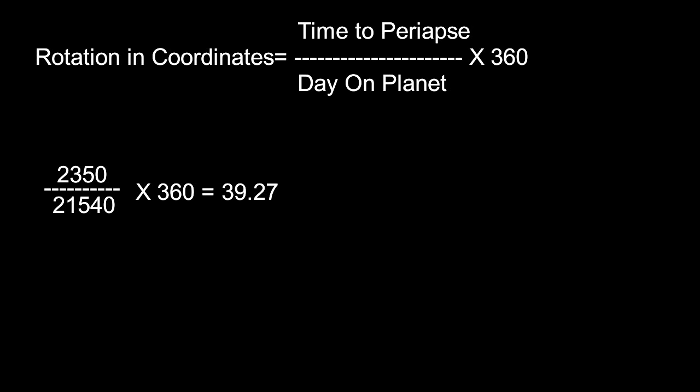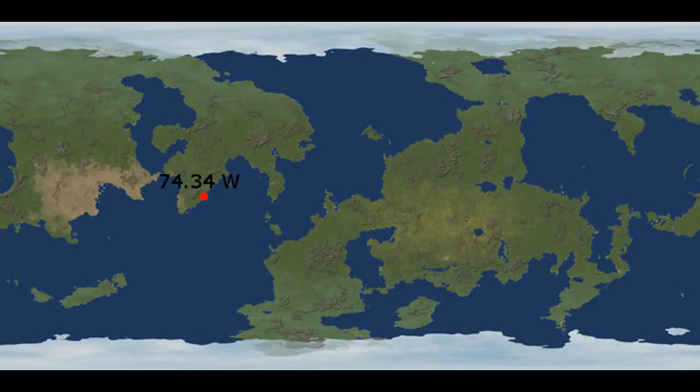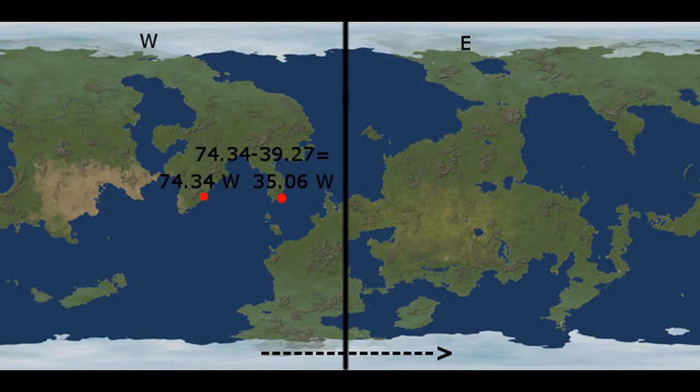Next we want a visual representation of why we're doing this and how it works. On this map I have highlighted the KSC at 74 degrees 0.34 west. Now in Kerbin and in real life, coordinate maps are divided into west and east and both have 180 degrees to add up to a full 360 of a circle. In these maps and in Kerbin it's rotating from left to right. So we're going to have to counteract the rotation of Kerbin to figure out where we're going to land. We take 74.34 west and subtract our 39.27 from that to give us where our periapsis should be, and that is 34.06 west.